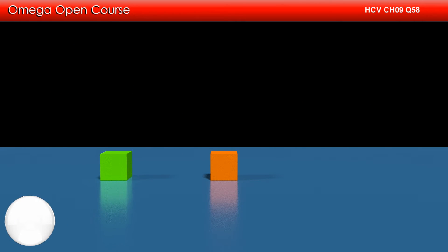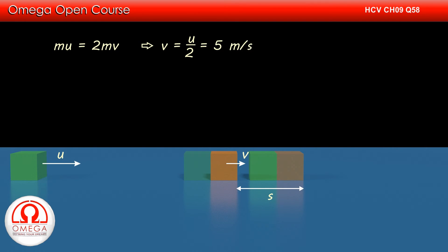In part B, since the collision is perfectly inelastic, both the blocks will move with the same speed after the collision. Let that speed be v. As per the conservation of momentum, mu must be equal to 2mv. This implies v is equal to u by 2 or 5 meters per second.